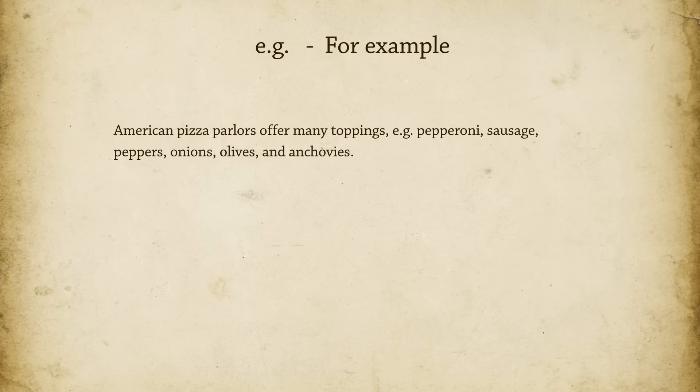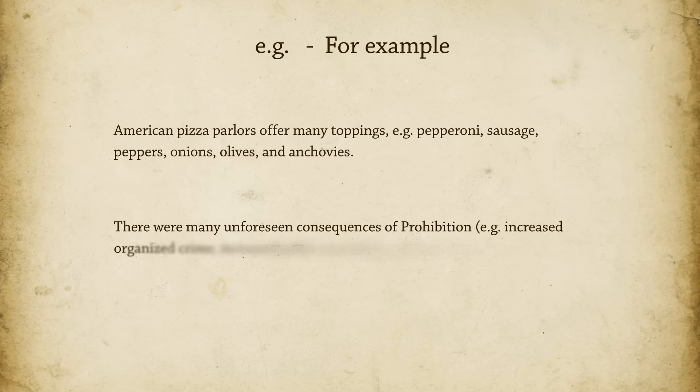Let's see eg in action. American pizza parlors offer many toppings — eg, pepperoni, sausage, peppers, onions, olives, and anchovies. There were many unforeseen consequences of prohibition — eg, increased organized crime, increased police corruption, and increased alcohol abuse.